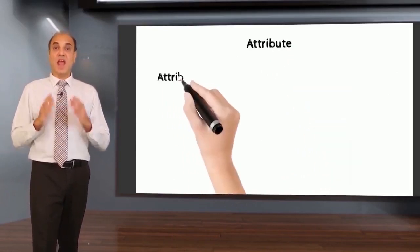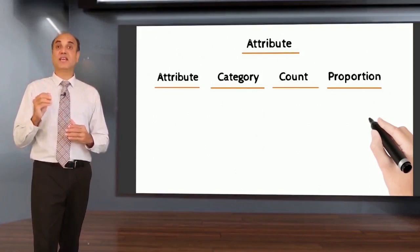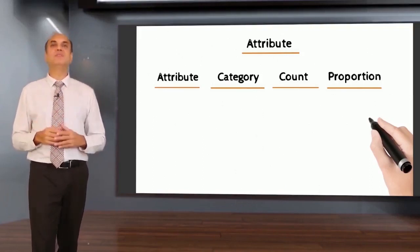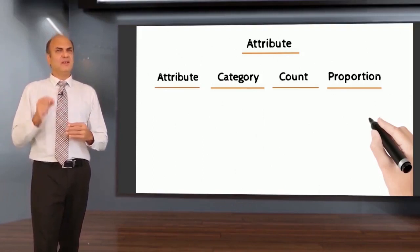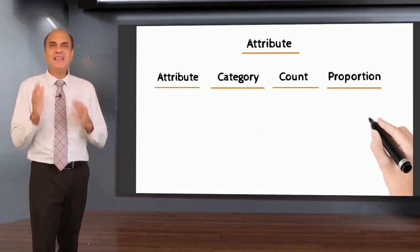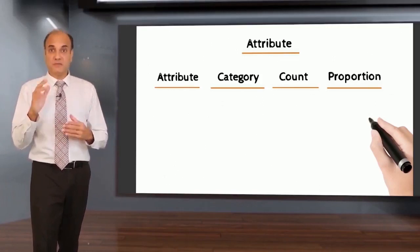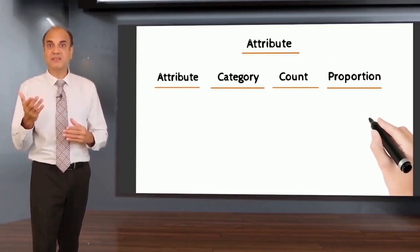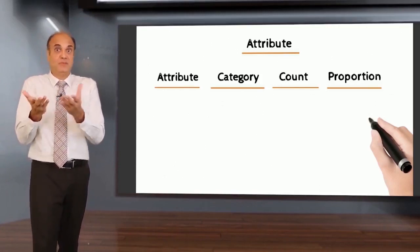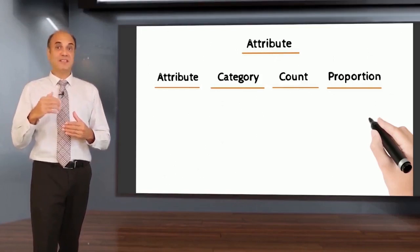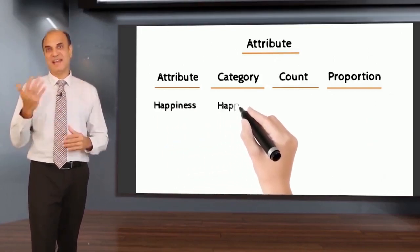Now let's talk about attribute data. Attribute data can be expressed in categories, and categories can be counted. For example, if you want to measure happiness, the easiest way is to create a category. If possible, create a binary category - presence or absence of that attribute. For happiness, two categories: happy and unhappy.